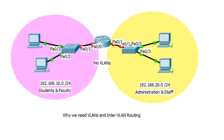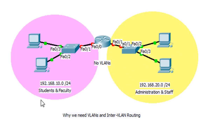This is going to be a video tutorial about inter-VLAN routing and also why we need VLANs. We need routing when we have more than one network. In this scenario, we've got a router and two networks — one on the left and one on the right — each attached to the router on an interface. We need two networks because we have students and faculty on one network, and administration and staff on a separate network.